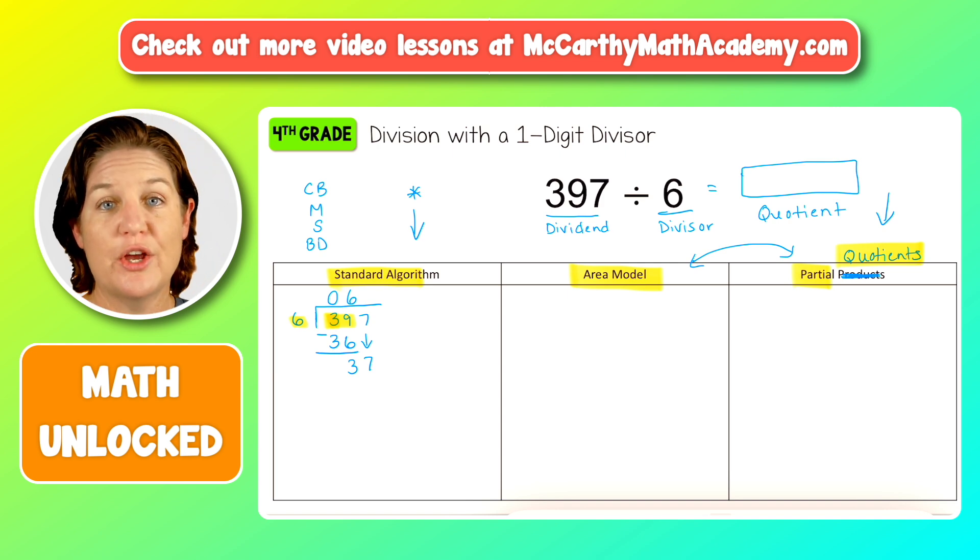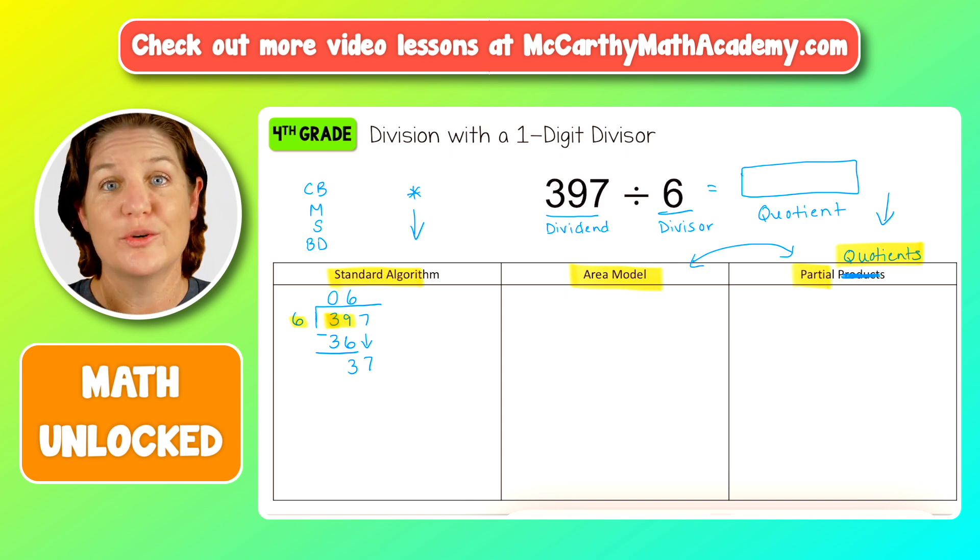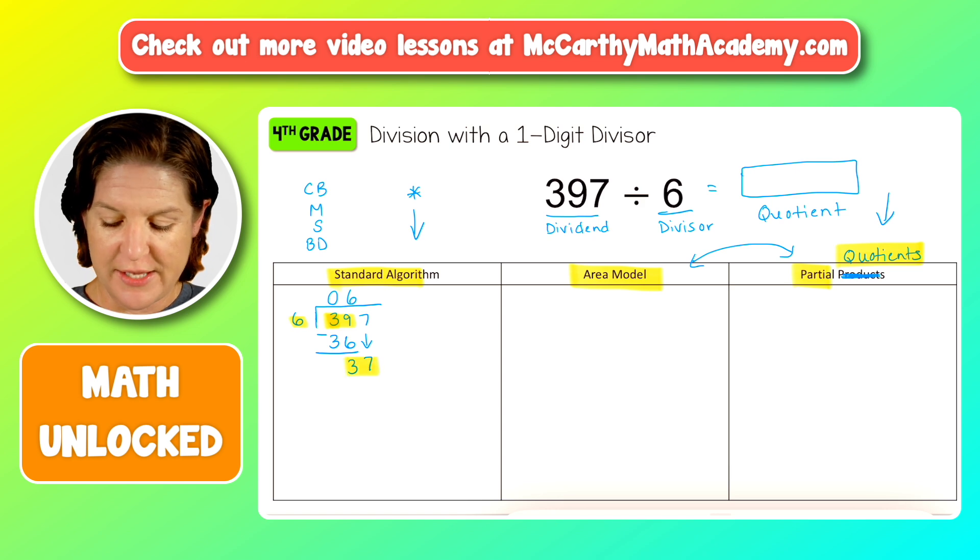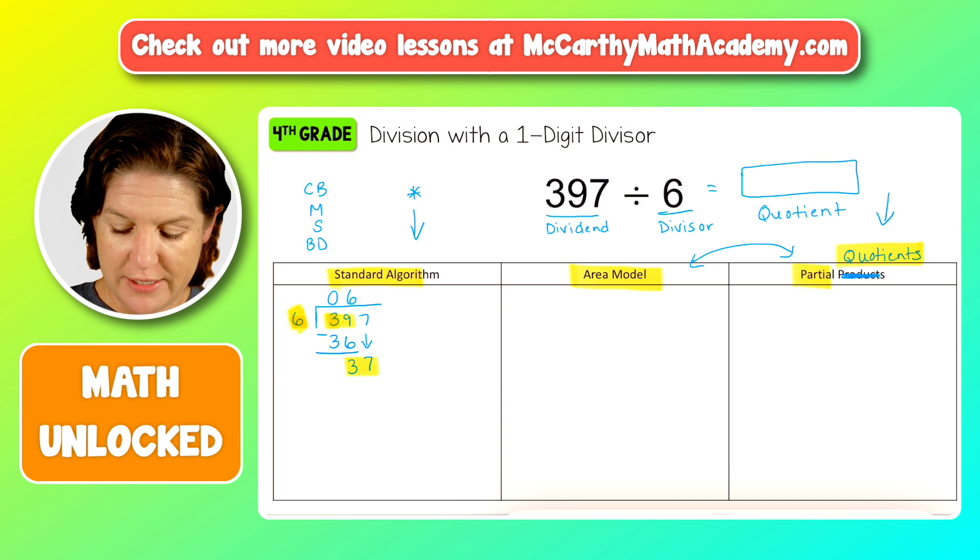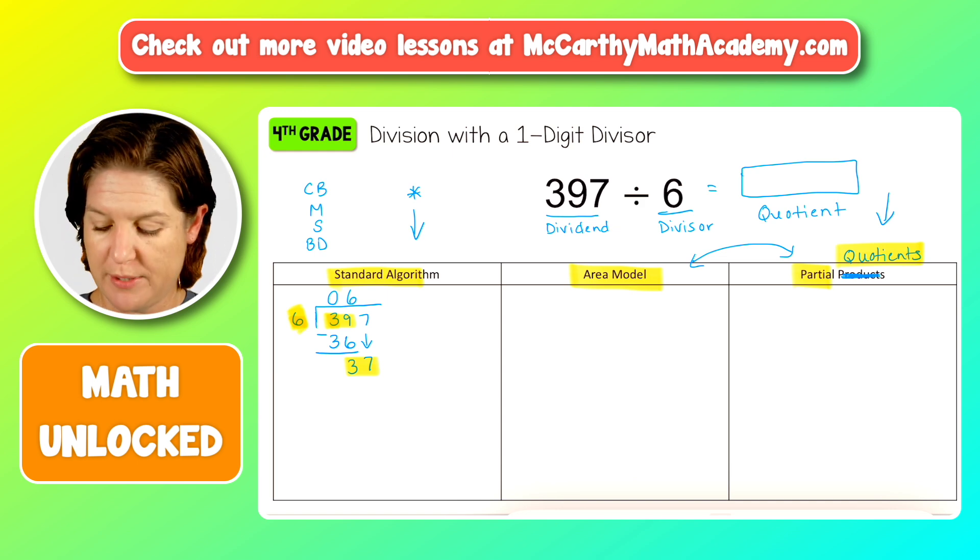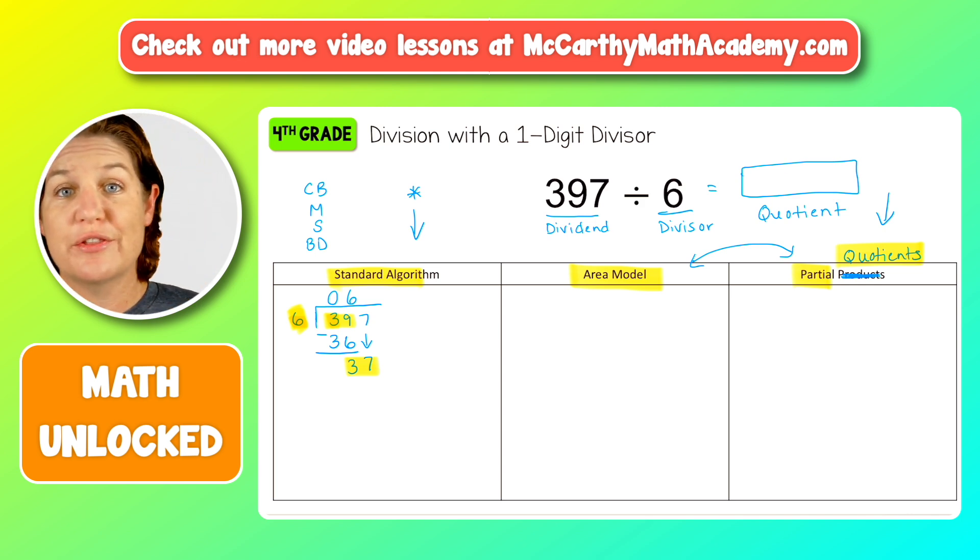And now we repeat it until we finish. And because right here, this 37 is greater than our divisor right up here, we can keep going. We can repeat it. Okay. So let's count by sixes until we get to 37.